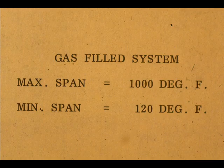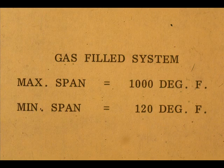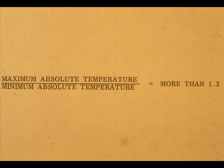They have a maximum operating span of 1,000 degrees Fahrenheit and a minimum span of about 120 degrees Fahrenheit. The span of the instrument is determined by the range chosen. Remember, we use absolute values. The ratio of the maximum absolute temperature to the minimum absolute temperature must be more than 1.3.